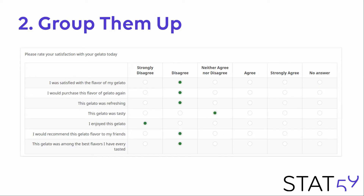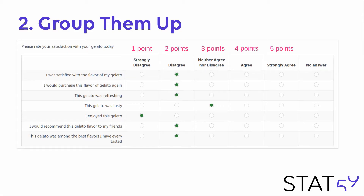Another option, if we want to use the Likert response scale, is to group them up. The original Likert scale is a group of Likert response items. Rather than simply asking 'were you satisfied with your gelato?', I split it into seven different questions: I was satisfied with the flavor of my gelato. I would purchase this flavor again. The gelato was refreshing. The gelato was tasty. I enjoyed the gelato. I would recommend this gelato to my friends. And this gelato was among the best flavors I have ever tasted. So here we have seven questions.